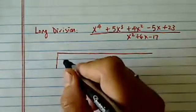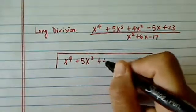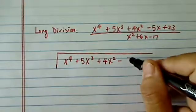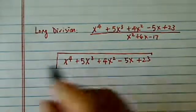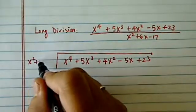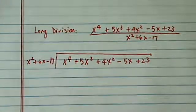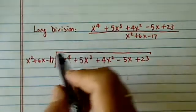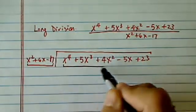x to the 4th plus 5x to the cube plus 4x squared minus 5x plus 23. Now notice I'm trying to leave as much room as I can. I'm trying to fill out the whole paper. The more room you have in case you do make a mistake, you can spot it easier. And hopefully you won't make a mistake in the first place. Here I have three terms, so I need three terms.